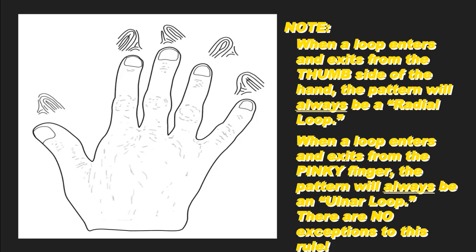So how do we figure that out? One of the easiest ways is to actually hold your hand directly above the print. When a loop enters and exits from the thumb side of the hand, the pattern will always be a radial loop. When a loop enters and exits from the pinky finger side, the pattern will always be an ulnar loop — and there are no exceptions to this rule. So if we know a fingerprint came from the right hand, we hold our right hand above it with the palm side down and observe whether the ridges recurve towards the pinky or towards the thumb.